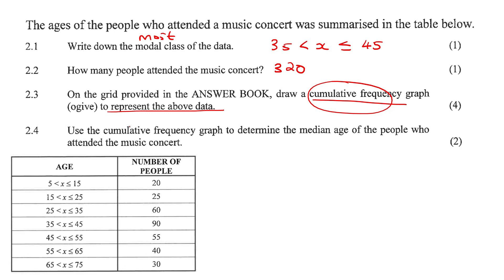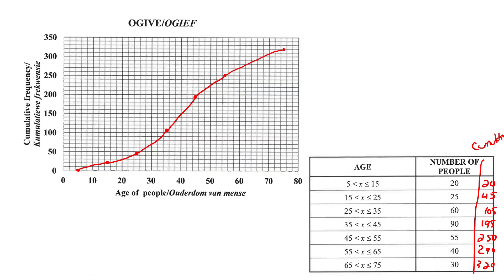Now it says use the graph to determine the median of the people who attended the music concert. The median. So median we usually use n plus 1 over 2. So n is the number of items or the number of people. So that would be 320 plus 1 divided by 2, so that's 321 over 2, which is 160.5.